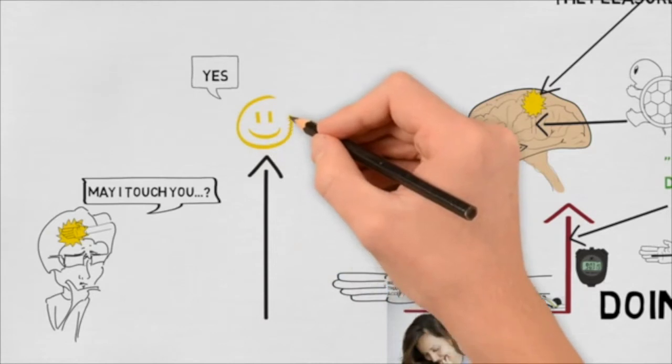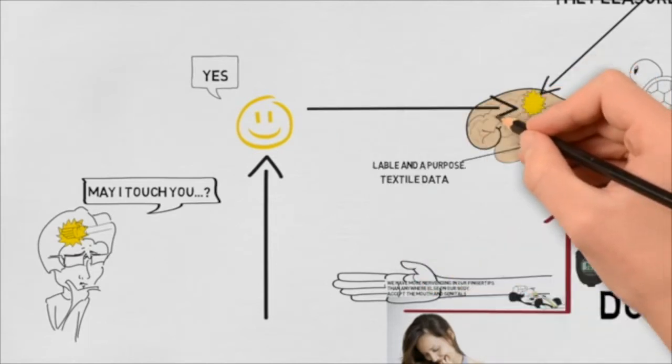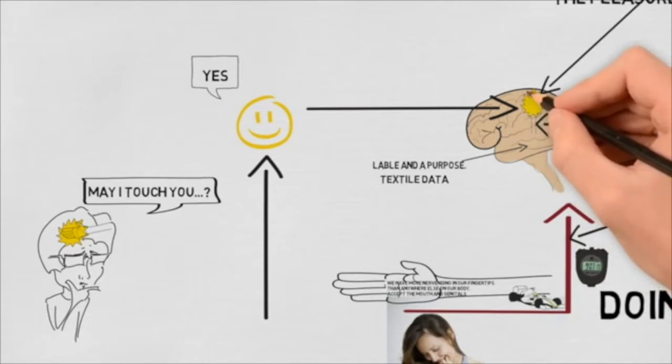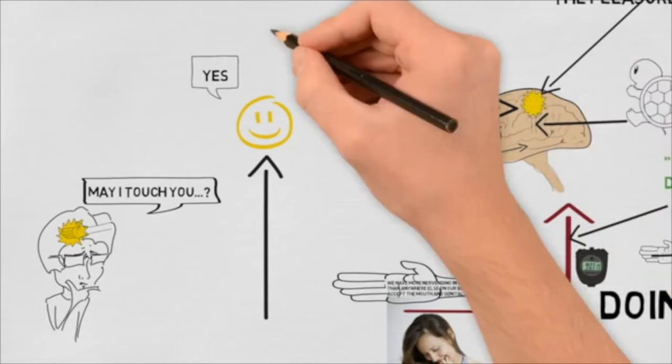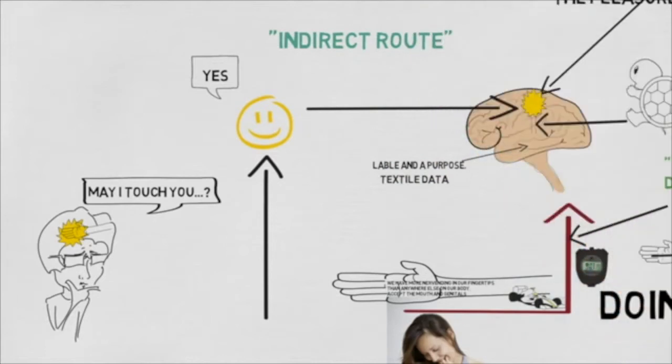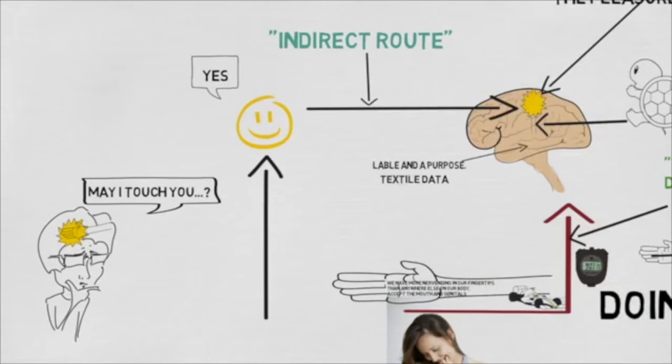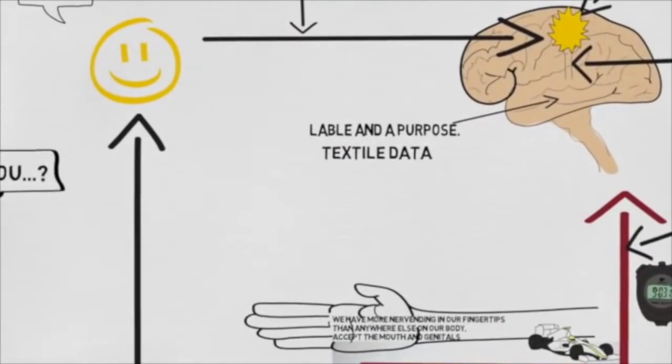So when the other person likes what is done to them, and they are smiling and they are getting aroused, and that gives us pleasure, we call that the indirect route of pleasure. Because we are receiving pleasure through our action that is causing a reaction in the other person.